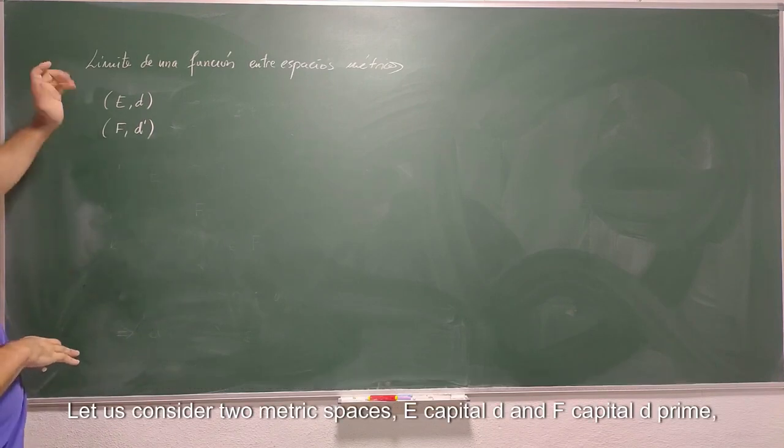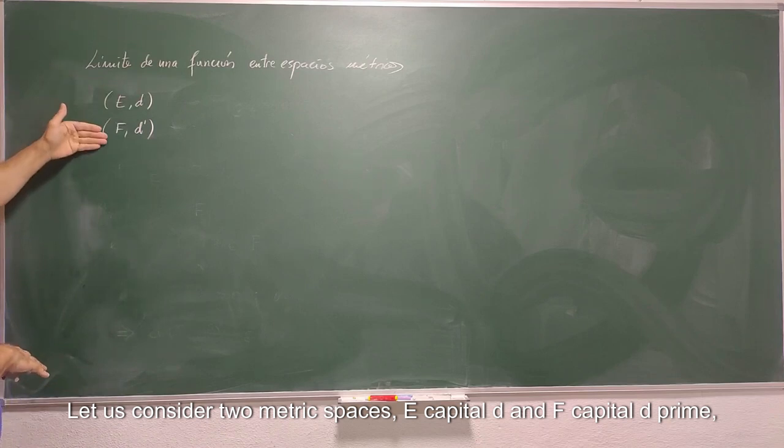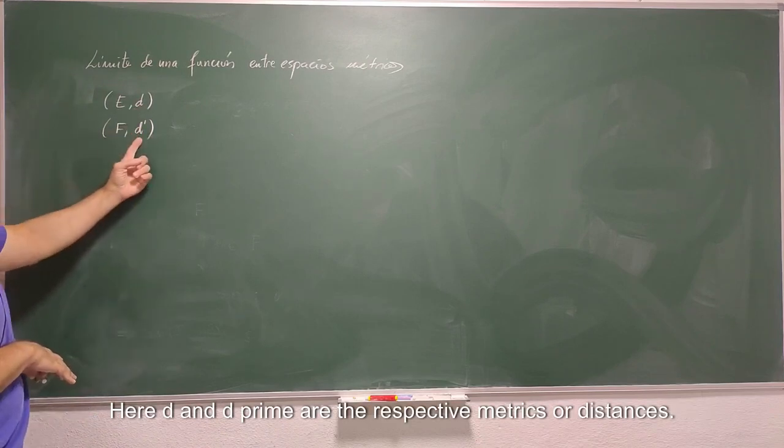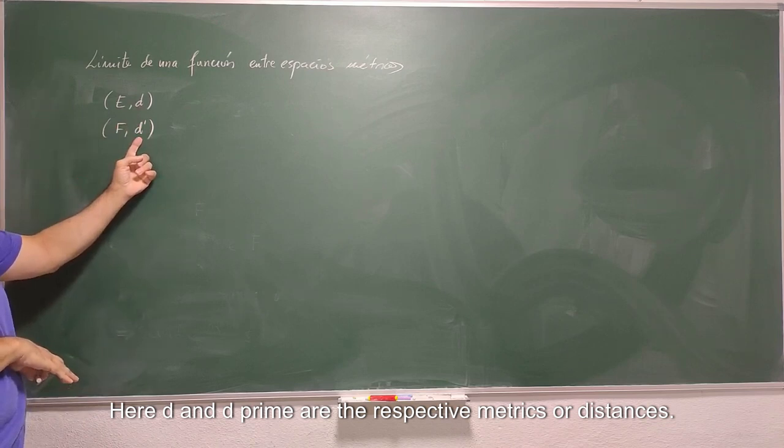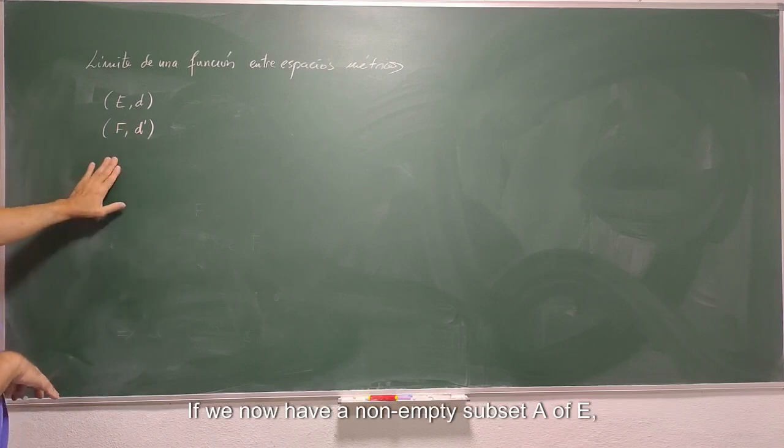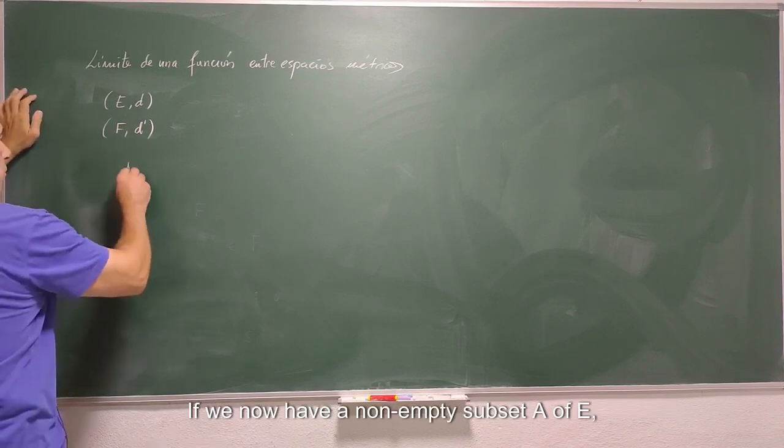Let us consider two metric spaces, E with metric D and F with metric D prime. Here D and D prime are the respective metrics or distances.